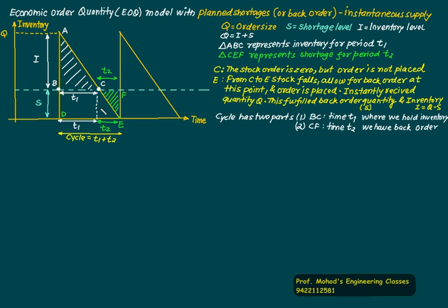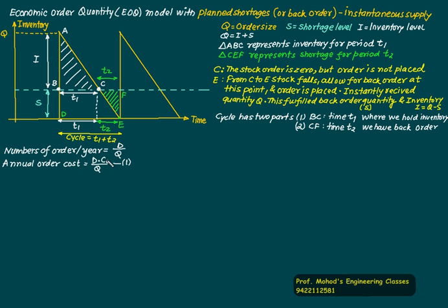The cycle has two parts: T1 (period BC) where we hold inventory equal to I, and T2 (period CF) where we use back orders. If D is the demand and Q is the order quantity, the number of orders per year is D divided by Q. The annual ordering cost is D times CO divided by Q, where CO is the ordering cost.